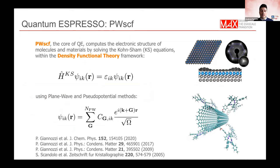Coming closer to the core science of what Quantum Espresso does, we can look at the PWSCF program, which solves the Kohn-Sham equations and computes the electronic structure of molecules and materials at the level of density functional theory. The Kohn-Sham equations are solved using a plane wave and pseudopotential approach, meaning that the wave functions are expanded in a plane wave basis and the interaction between electrons and ions is described by means of pseudopotentials.